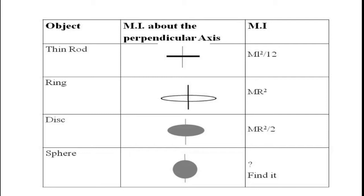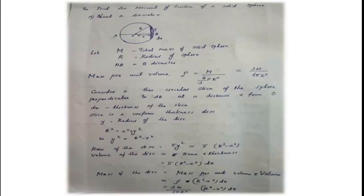Now, we are going to find out the moment of inertia of the sphere about a diameter. Find the moment of inertia of a solid sphere about its diameter. The figure is drawn here and AB is any diameter; O is the center of the sphere. We have to find out the moment of inertia of the sphere about AB.